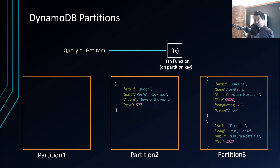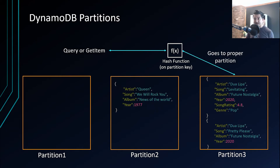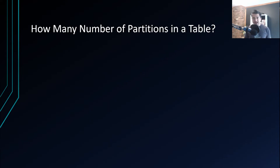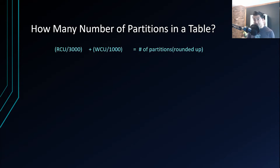Similarly, when you read an item from a DynamoDB table and pass the partition key, DynamoDB runs the same hash function, determines the partition, goes to that partition, and fetches the item. Now the big question is: how do you determine the number of partitions in a DynamoDB table? There is a formula for this.